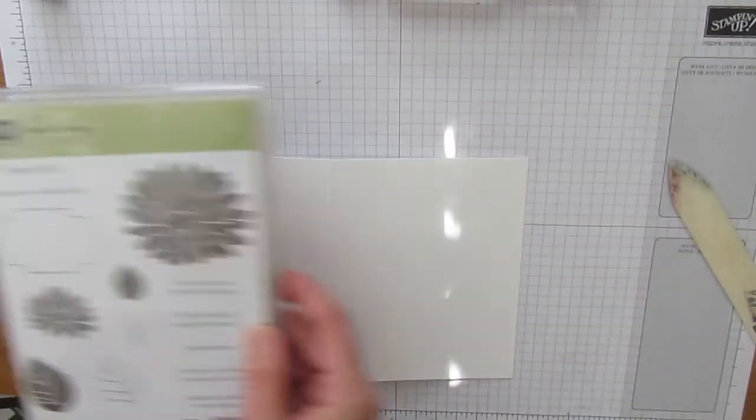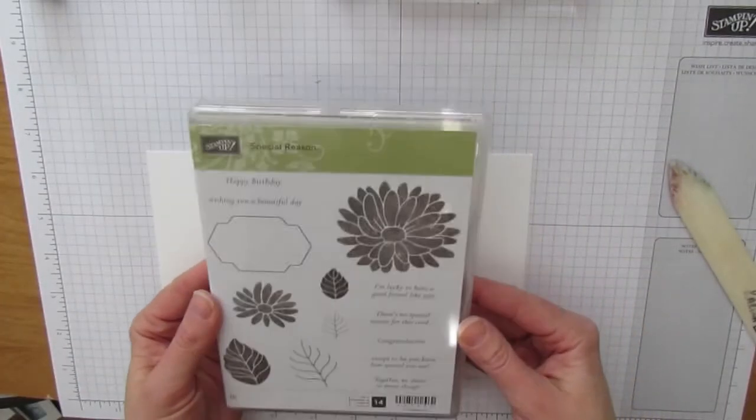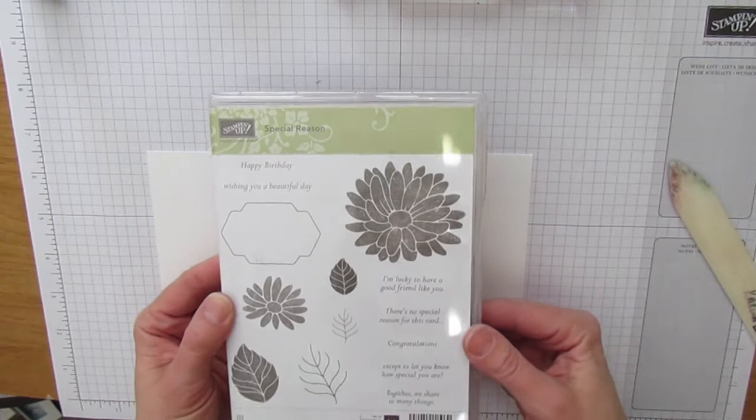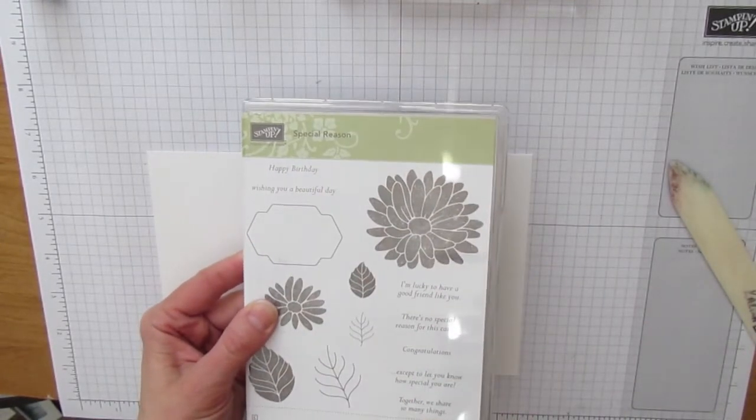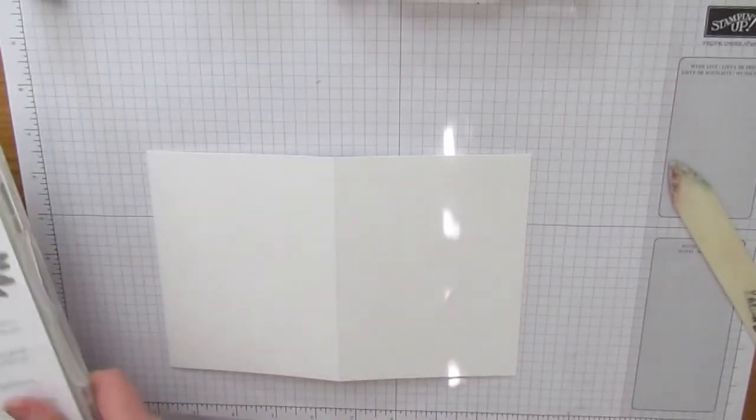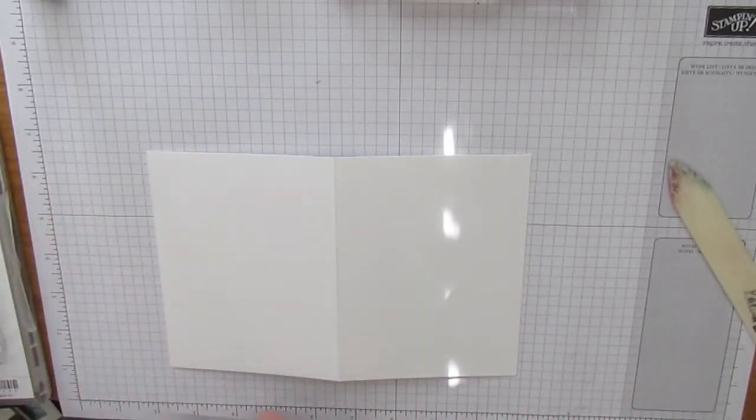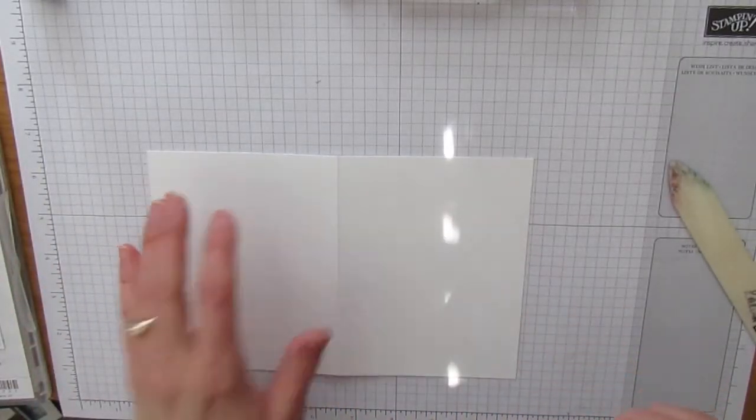I'm using the Special Reason stamp set. This is what the stamp set looks like and it has matching framelits that cut out beautiful flowers as well. I love the sentiments in the stamp set. It's a really great stamp set.